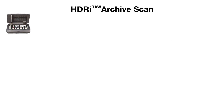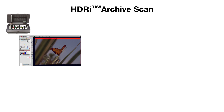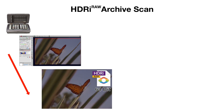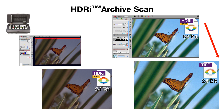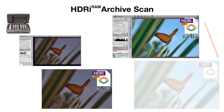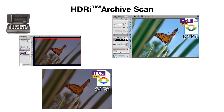Scanning to HDRI RAW works differently. In this process, the original is scanned without any optimizations and saved as a 64-bit file. This file acts as an intermediate step in the workflow. It is the foundation for optimizations on which the 24-bit files will be based on. With this process, faulty image optimizations are no longer a problem.